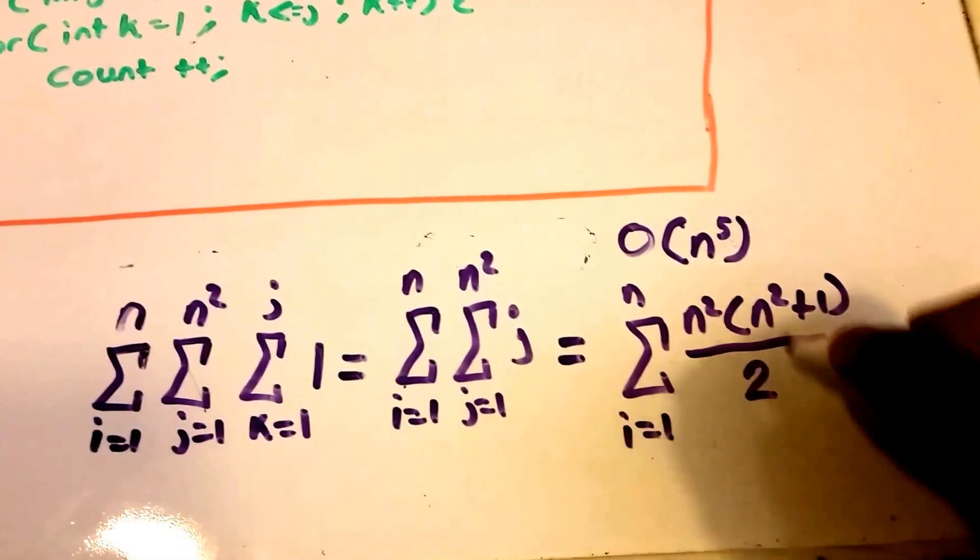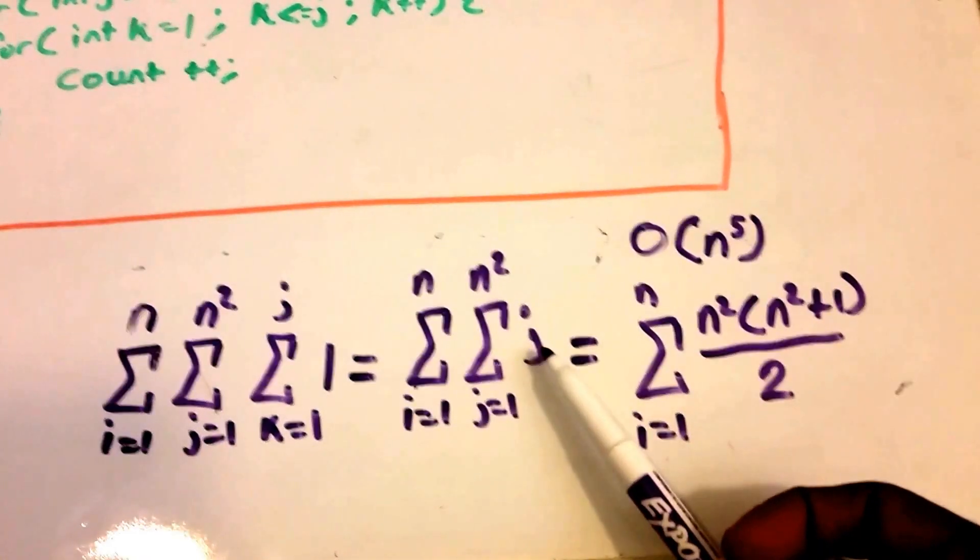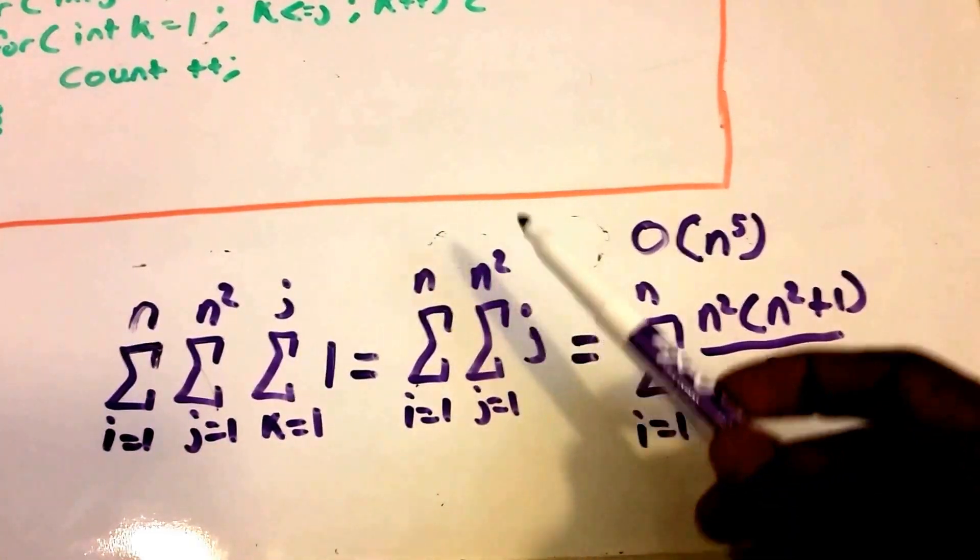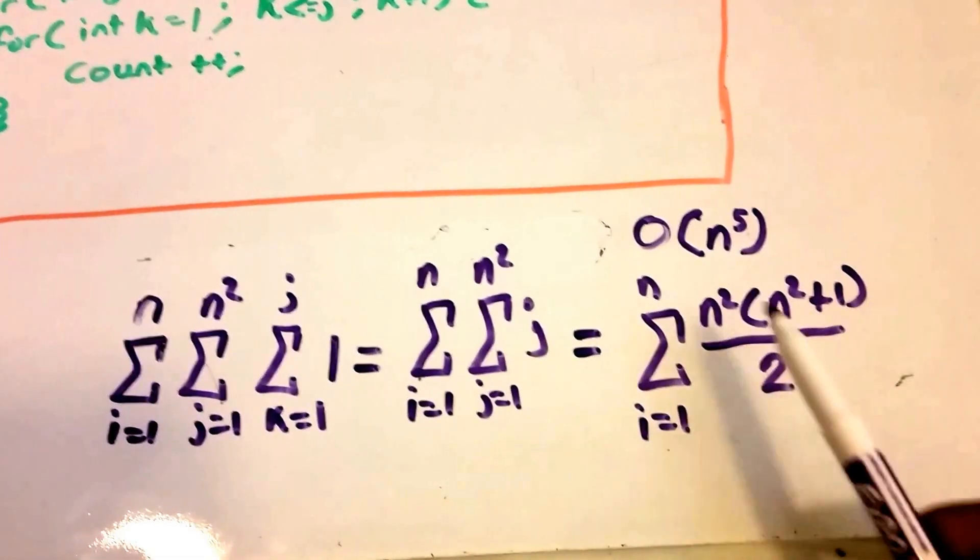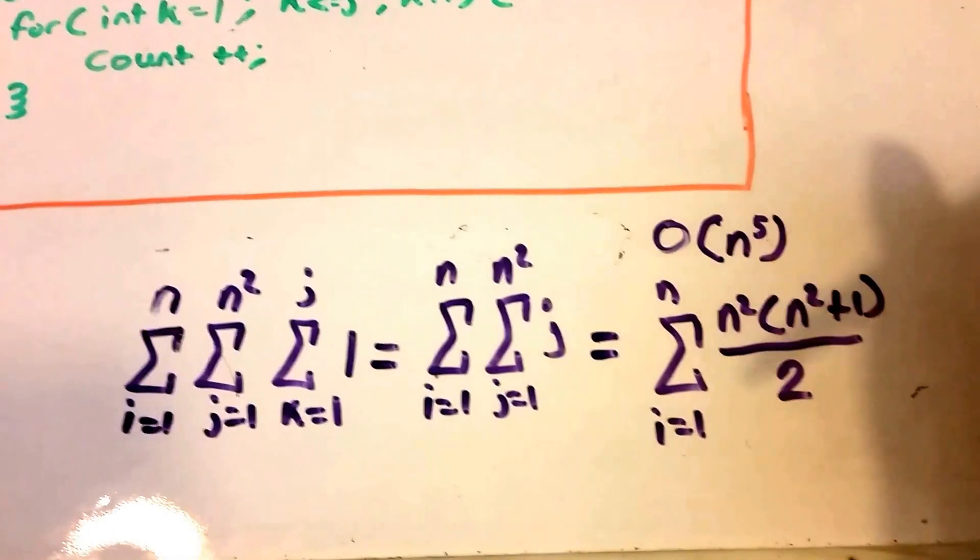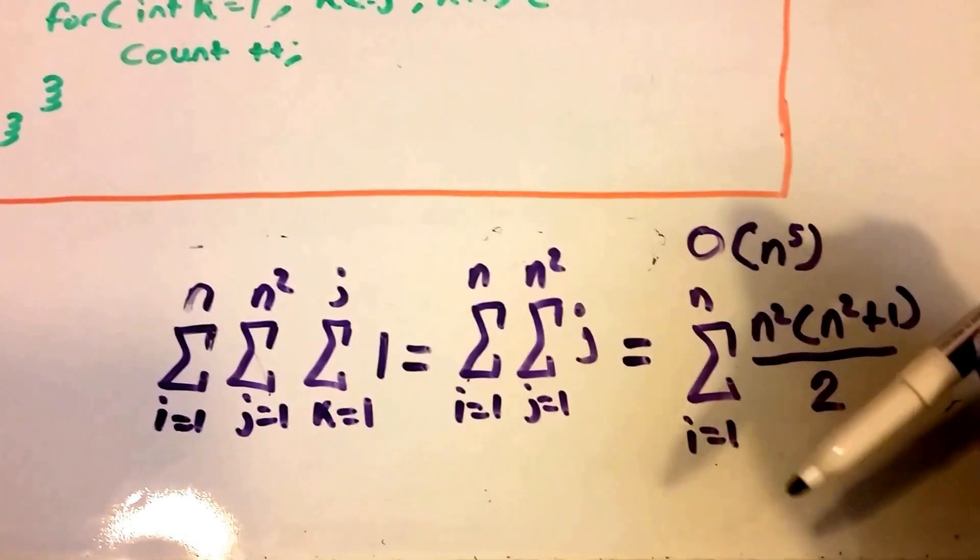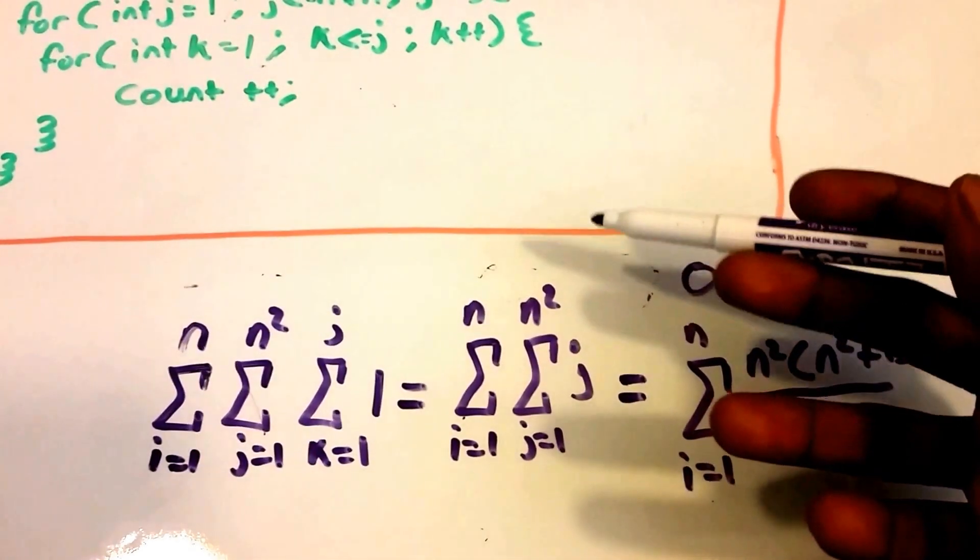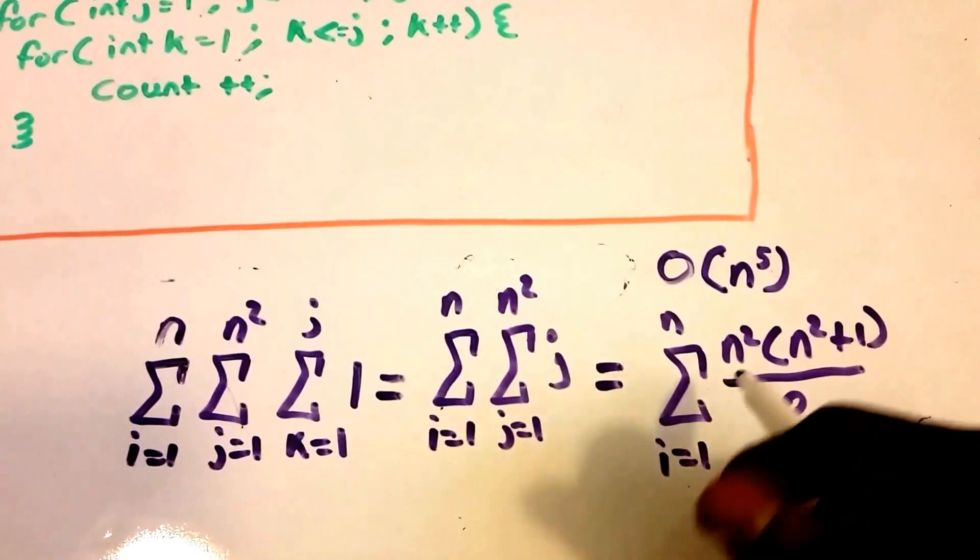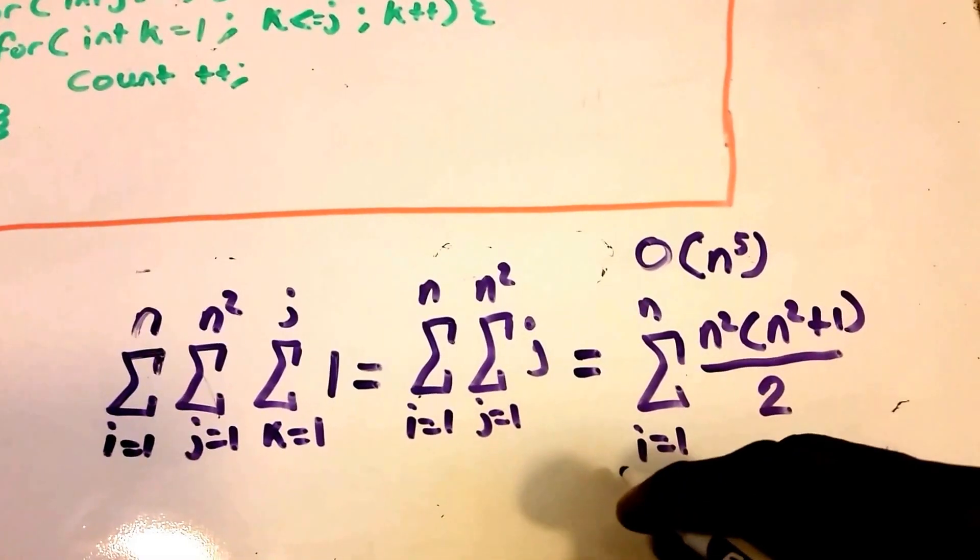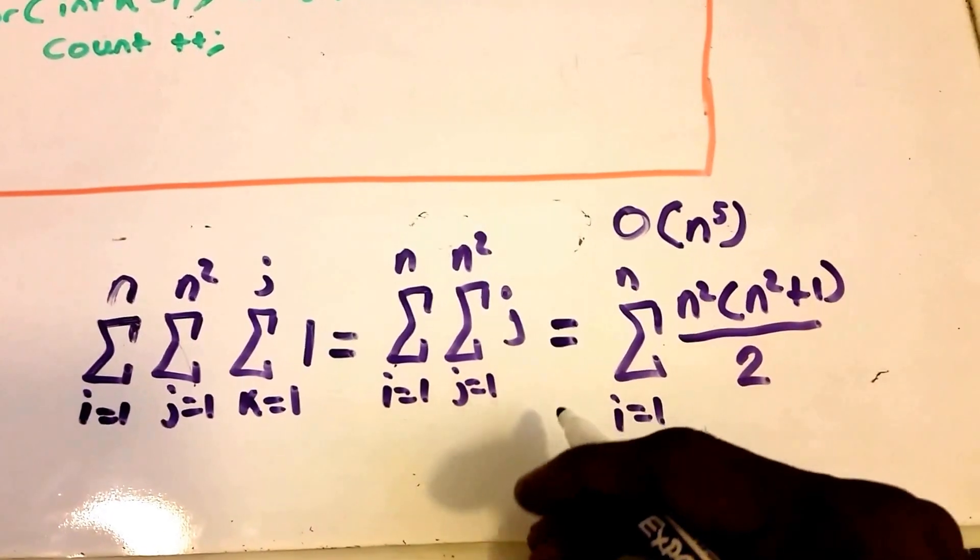You may say, well how do you know that first summation just equates to j, or how do you know this second summation equates to n squared times n squared plus one divided by two? There are summation formulas that you can use, and I will be sure to put them in the description below as well as links to other algorithm analysis and Big O videos that I have that you guys can check out for more examples.